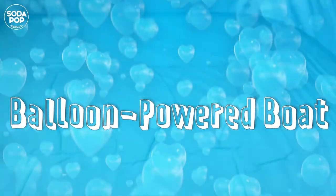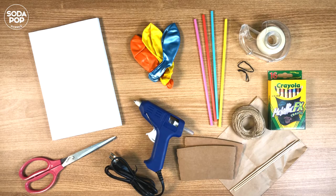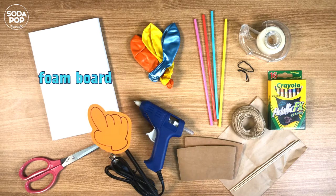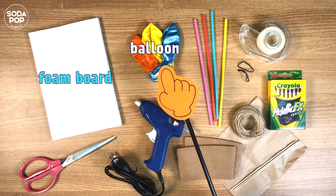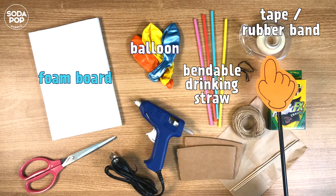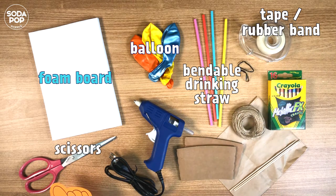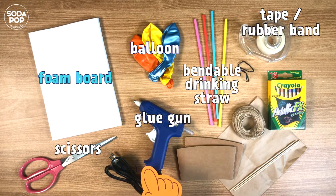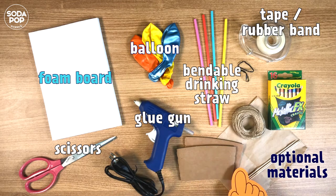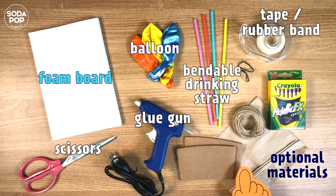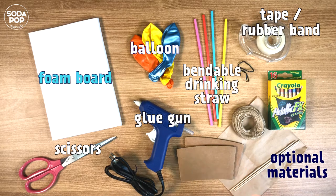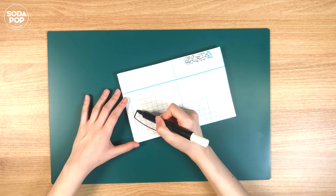Let's get to it. The materials we need today are foam board, balloon, straw, tape or rubber band, scissors, and glue gun. Optional: coffee cup sleeves, paper stick, and crayons to decorate the boat. Cut the foam board in a boat shape.